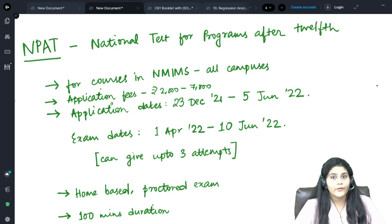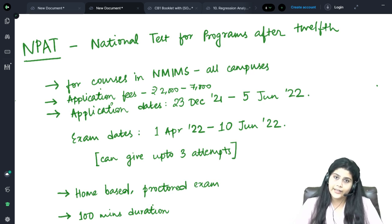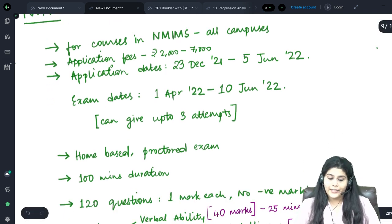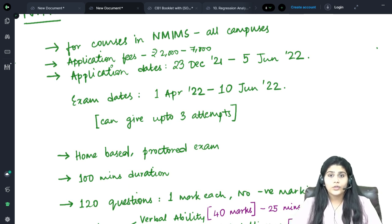Then you have to appear for the NPAT examination as a prerequisite and secure the minimum number of marks before you move on to the next stage of your application. This examination will cost you around 2,000 to 7,000 rupees depending on the number of courses and campuses you select as options.